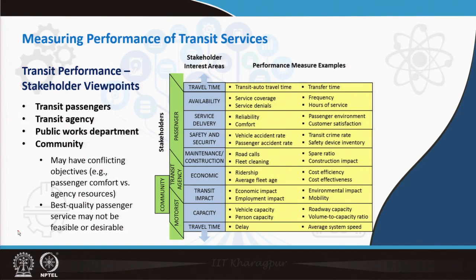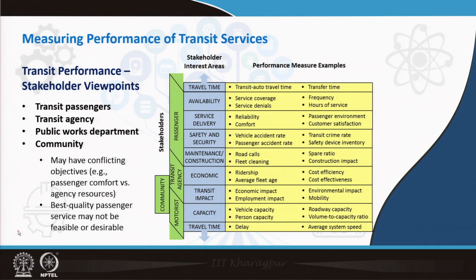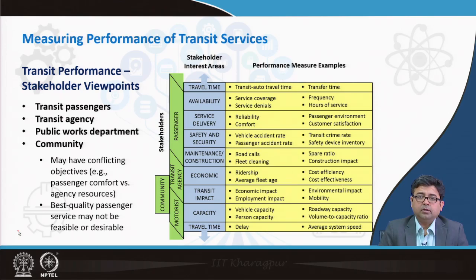These four stakeholders start with the passengers who use it, the transit agencies who operate it, the public works department which maintains the roads or structures on which these systems run, and also the community at large. It is a very fine balancing act to ensure the viewpoints of all stakeholders are taken into account when measuring performance. If one stakeholder's viewpoint is excluded, the analysis becomes skewed — for example, ignoring passengers or placing too onerous demands on the transit agency.